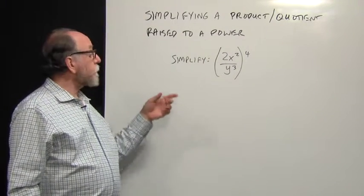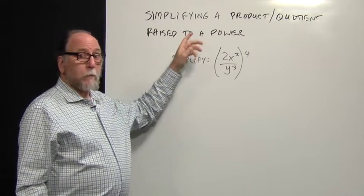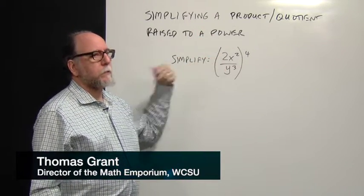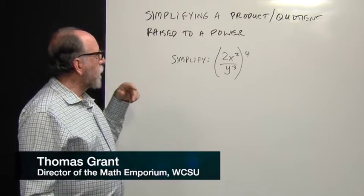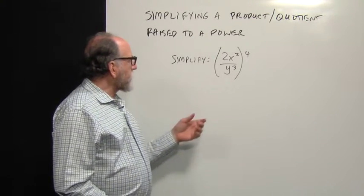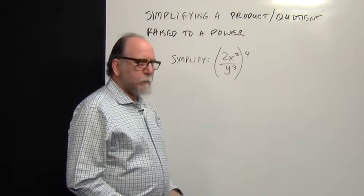In this segment, we're going to talk about how to simplify a product or quotient that's raised to a power. This is both a product and a quotient, so it should cover all the bases, and it's raised to the fourth power.